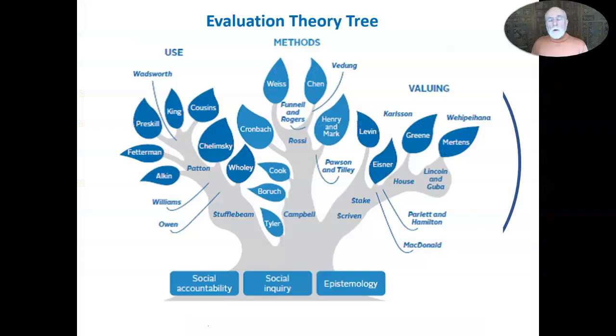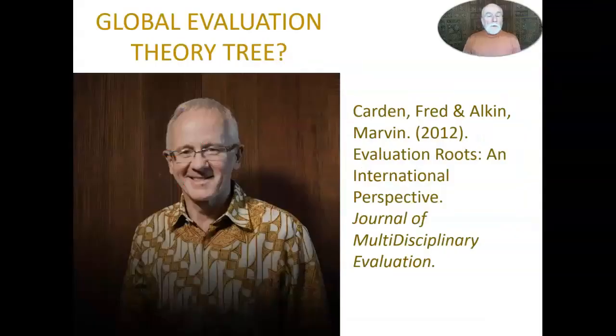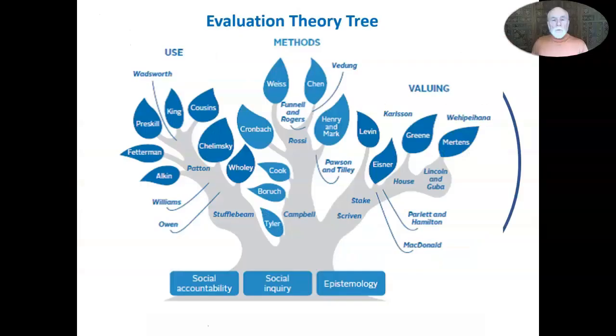The evaluation theory tree has evolved over time, adding new theorists. It has raised discussions about what a global evaluation theory tree would look like. In 2012, Marv Alkin and Fred Carden did an article on international perspectives that could inform the theory tree. As the book has become more important and significant, it has been surrounded by greater controversy.